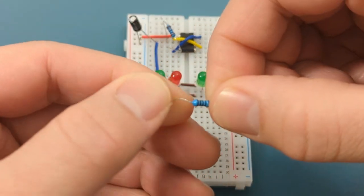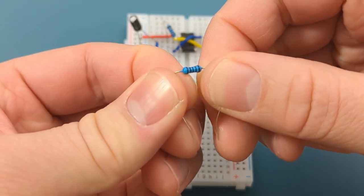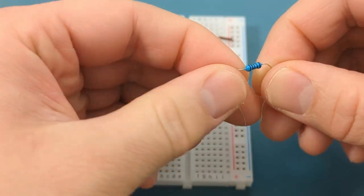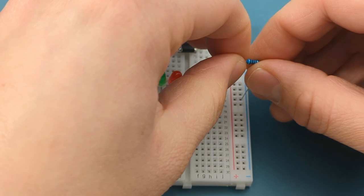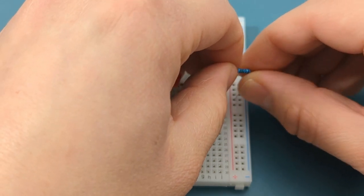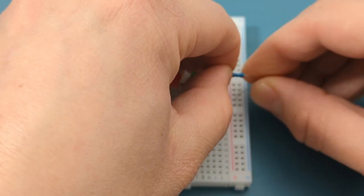Bend the ends of a 100 ohm resistor. Place the 100 ohm resistor in row 16, with one end connected to the red LED and the other positioned next to the positive rail.